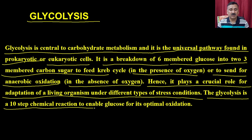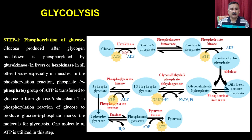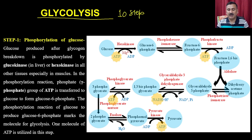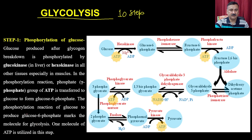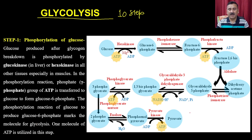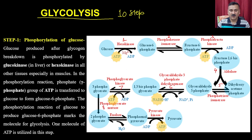Glycolysis is a 10-step chemical reaction to enable the glucose for its optimal oxidation. These are the 10 steps: step 1, 2, 3, 4, 5, 6, 7, 8, 9, and in the 10th step you generate pyruvate. In step number 1, you are actually going to do the activation of the glucose molecules.